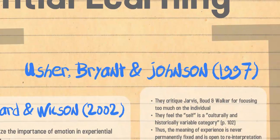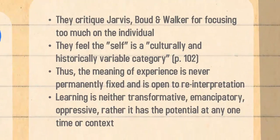Usher, Bryant and Johnson critiqued Jarvis, Boot and Walker for focusing too much on the individual. They felt that the self is a culturally and historically variable category — if you were born in a different time and a different culture, your view of yourself would be quite different. This aligns with Bandura's social learning and reciprocal determinism, meaning we act on the environment and the environment acts on us. Thus the meaning of experience is never permanently fixed; it's always open to reinterpretation — hindsight is 20-20.